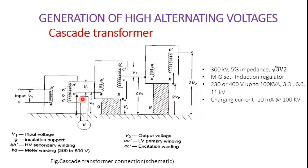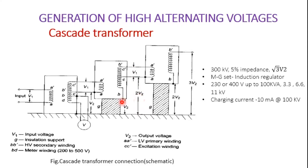Similarly, we will have different sets. The output of the first transformer — the stepped-up voltage — feeds the input to the second transformer. There is a rise in voltage, and that voltage is given as input to the third transformer. There is an insulation support G maintained at voltage V2. The voltage input to the second transformer is V2, and the rise in voltage is V1, resulting in 2V2. The insulation support G maintains V2, and the rise in voltage is 2V2.